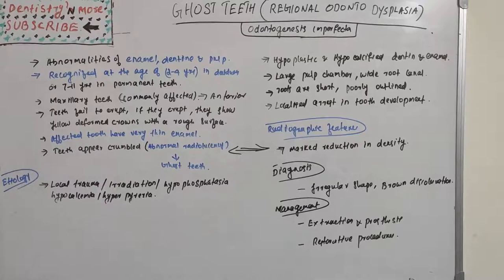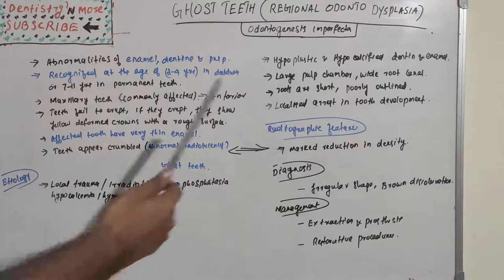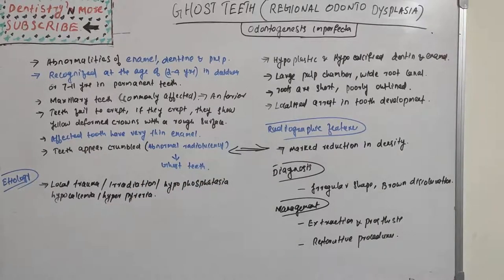The affected teeth have very thin enamel and appear crumbled, which is due to their peculiar radiographic feature. Radiographically, they show abnormal radiolucency — a marked reduction in radiodensity. This abnormal radiolucency gives the tooth a ghost appearance, which is why the condition is known as ghost teeth.